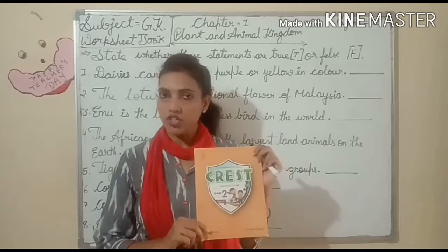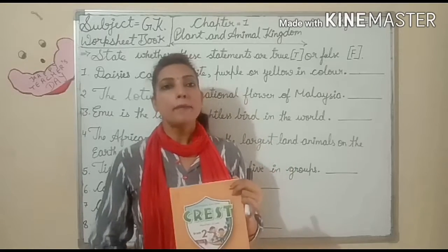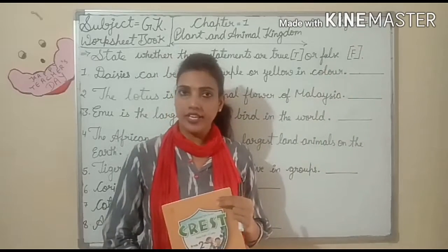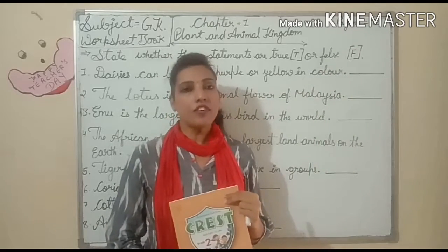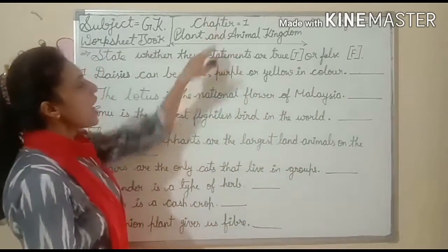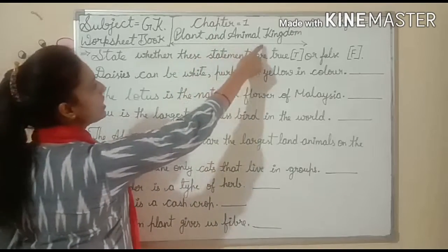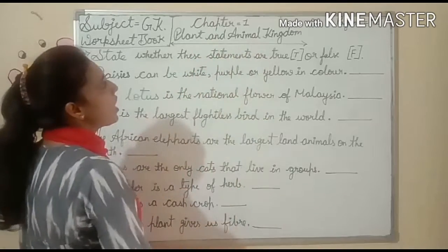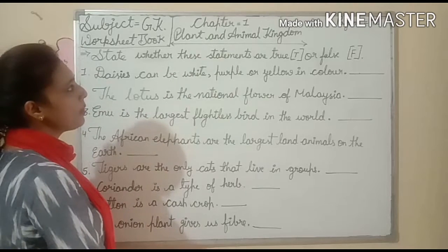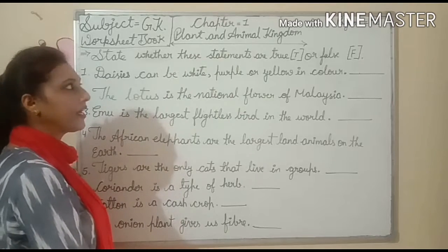Students, this is your worksheet book. We will start from page number 72. Today we will take chapter number 1, and the chapter name is Plant and Animal Kingdom. Today we will start chapter 1.